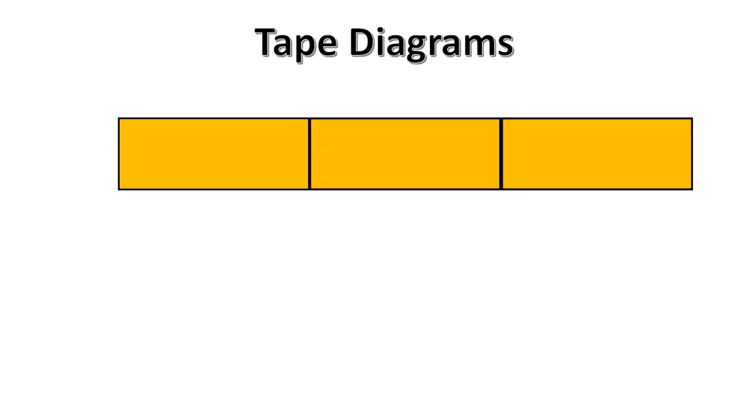This instructional video will help you to better understand the usage of tape diagrams in solving multiplication problems. A tape diagram is a neatly arranged picture to show groups where the boxes are set up side by side. Each box will contain the same number of items for multiplication.